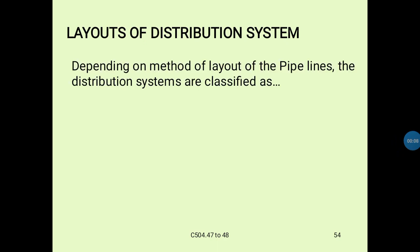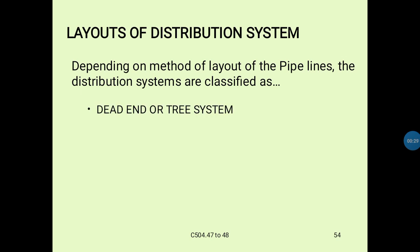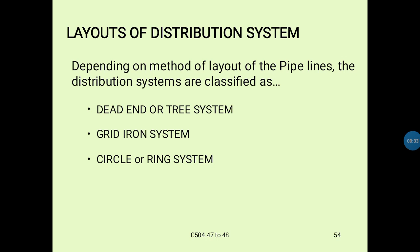So depending on the method of layout of the pipelines, the distribution systems are classified as: the dead end or tree system, grid iron system, circle or ring system, and radial system.